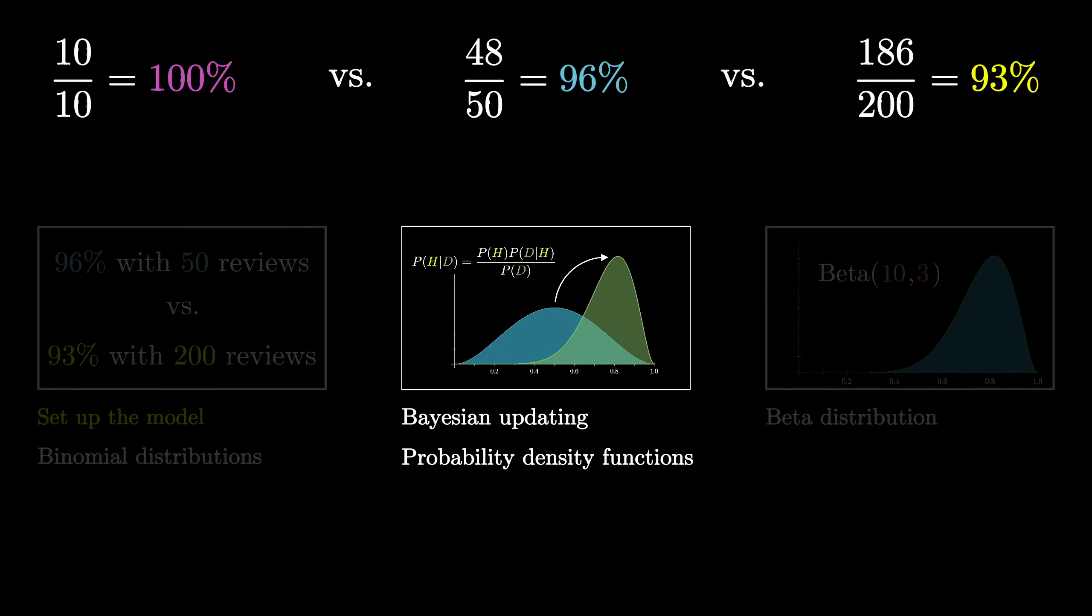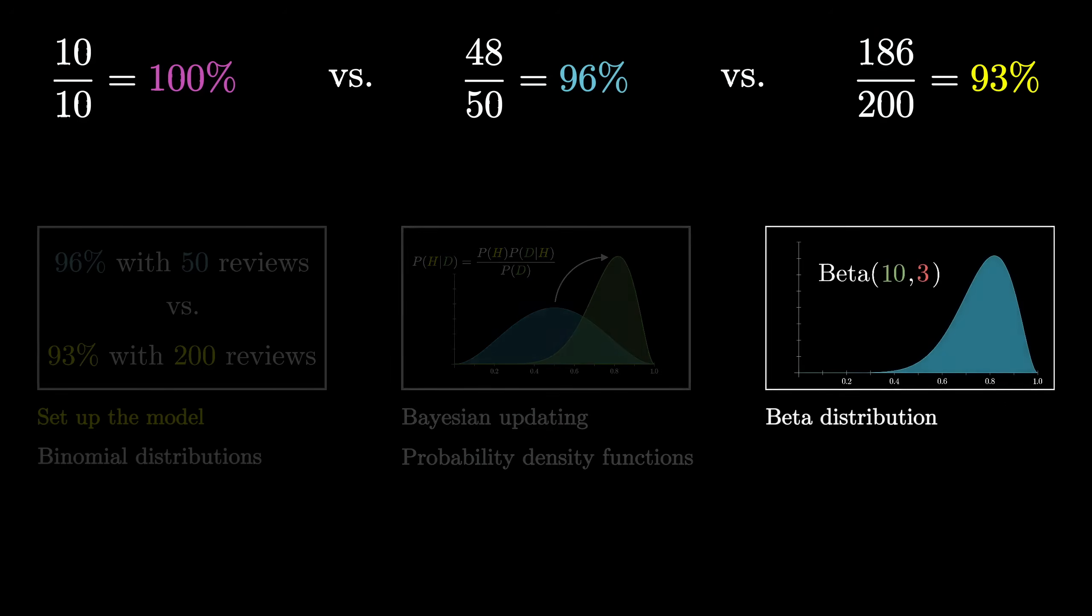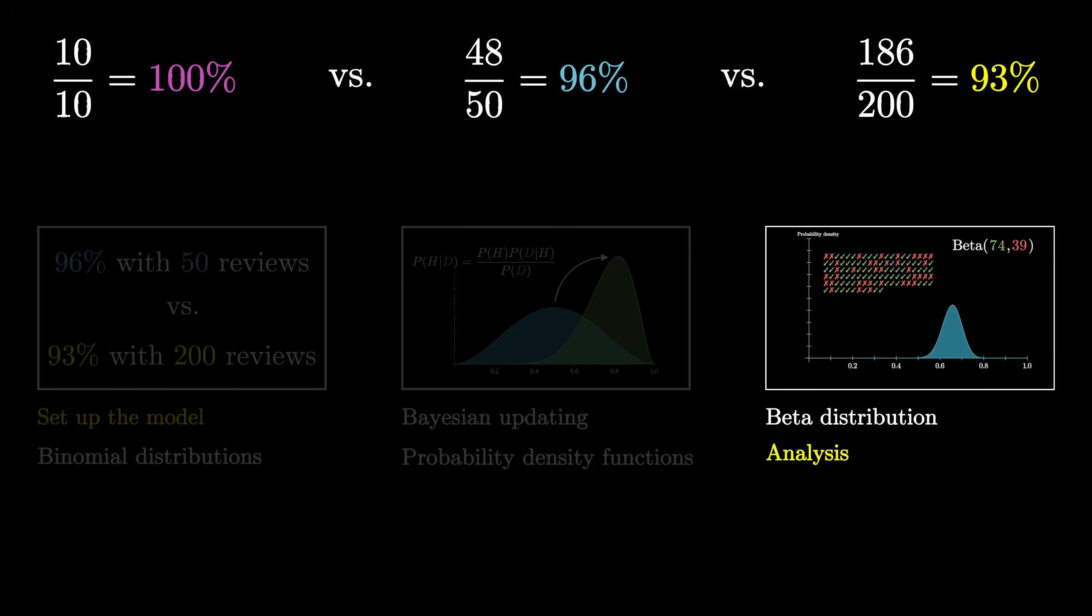The second is going to bring in ideas of Bayesian updating and how to work with probabilities over continuous values. And in the third, we'll look at something known as a beta distribution and pull up a little Python to analyze the data we have and come to various different answers depending on what it is you want to optimize.